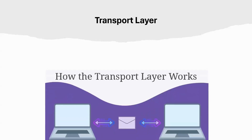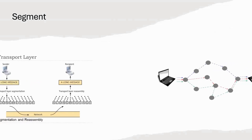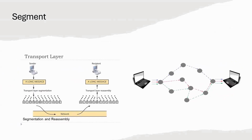So what exactly is the transport layer? Think of it as the traffic controller of your network communication system. The transport layer is responsible for reliable data transfer, and it transfers data between devices. It ensures that this data arrives at its destination intact and in the correct order. At layer four, data is broken down into smaller pieces called segments, and these segments are like puzzle pieces — each needs to reach the destination to complete the whole message.